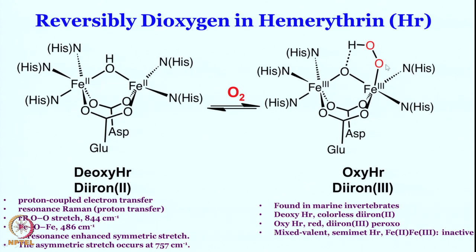One can utilize resonance Raman data to characterize this fully oxidized oxy-hemerythrin diiron species. Resonance Raman data shows that the oxygen-oxygen stretch is around 844 wavenumbers, which means this is a hydroperoxo species — this is a peroxo oxygen stretch at around 844 wavenumbers. Resonance Raman also shows that the iron-oxo-iron symmetric stretch is around 486 wavenumbers and the asymmetric stretch is around 757 wavenumbers for this iron-oxo-iron.